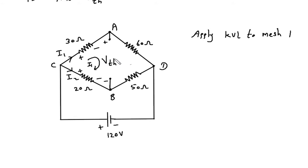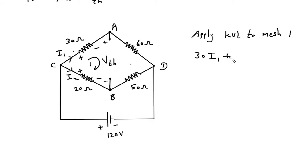Now we will apply KVL to mesh number 1. Starting from a point in mesh 1, the KVL equation is: 30·I1 plus VTH minus 20·I2 is equal to 0.